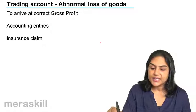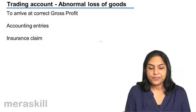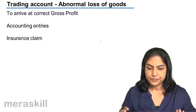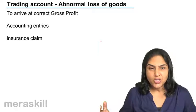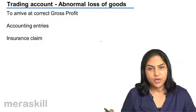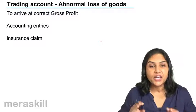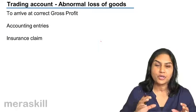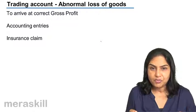Similarly, let us understand abnormal loss of goods. What is the treatment for abnormal loss of goods? When goods are lost by fire, flood, or such other abnormal reasons, we try to find out the gross profit — the normal gross profit. We do not want to find out a gross profit after these abnormal losses. We want to know the correct gross profit.